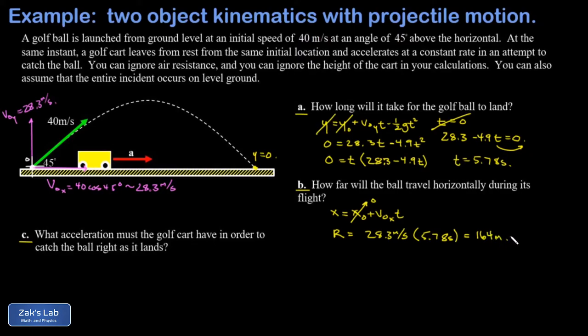Finally we get to this sort of wacky new question in part C: what acceleration does the golf cart have to have in order to catch the ball right as it lands? So I know the distance the cart has to travel, I know how long it takes to travel that far, and I'm just trying to solve for what's the constant acceleration that gets that done.